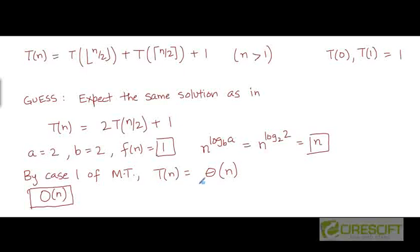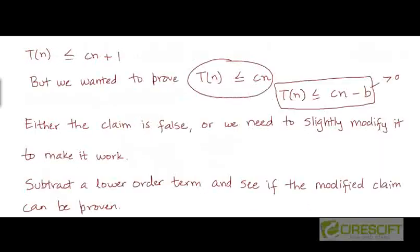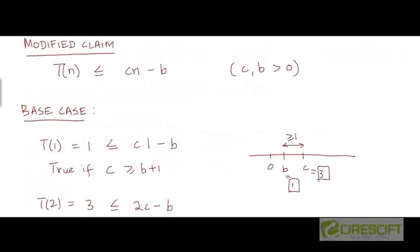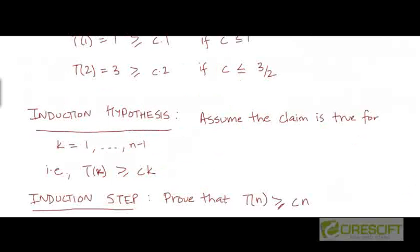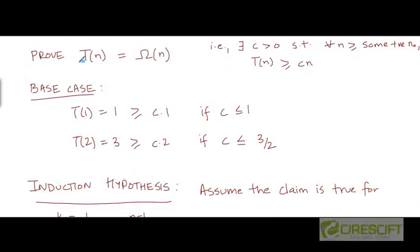Let's now try to prove the lower bound on T. The lower bound is going to be Big Omega, because we want to prove that T is in Theta. So we need to prove that T is in Big Omega. More formally, we want to prove that there exists a positive constant C such that for all values of n larger than some threshold value, T will be bounded from below by a constant multiple of n. Note that we are not subtracting a lower order term here, because we are going to first try to prove this directly.